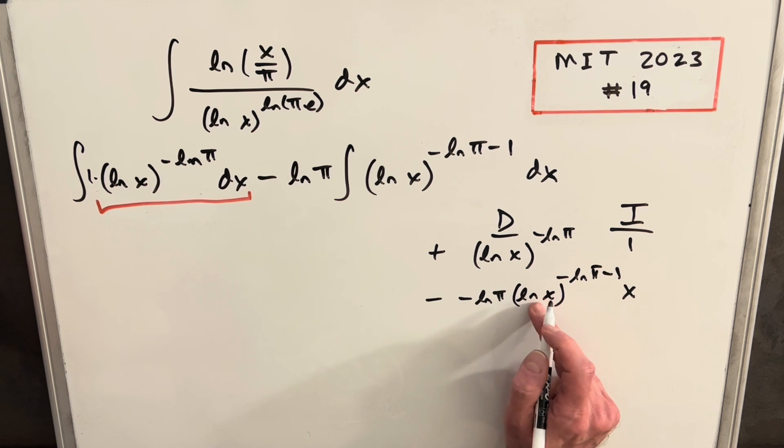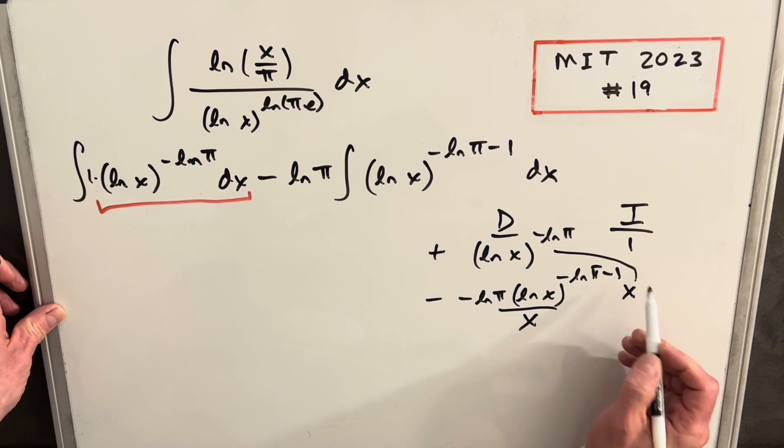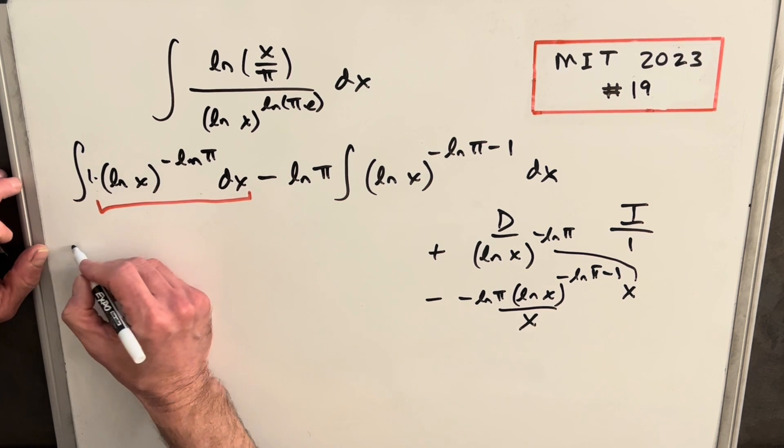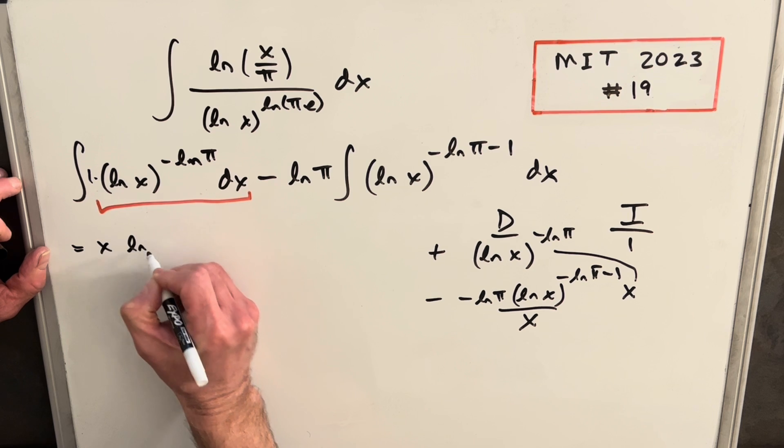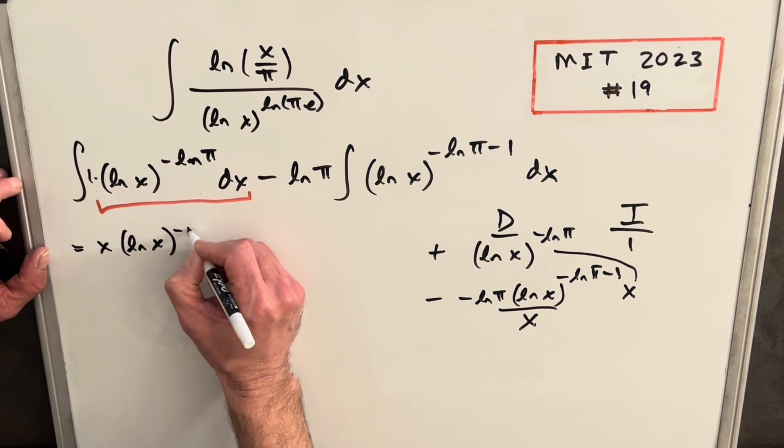Then chain rule, the inner part, the derivative of this is going to be just 1 over x. So we're going to have part of the answer right here. So we're going to have part of the answer being x(ln x)^(-ln π).